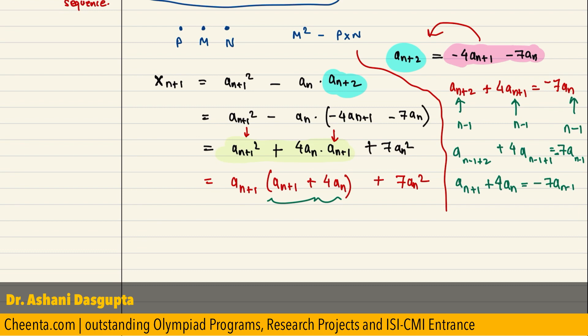So, we get it, we get what is this. This is simply negative 7 a(n-1). So, finally, we get 7 an square. This is coming from here, minus 7 a(n-1) times a(n+1).